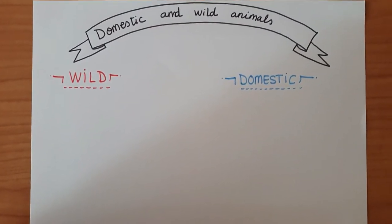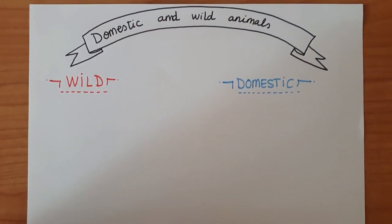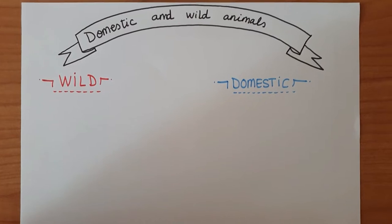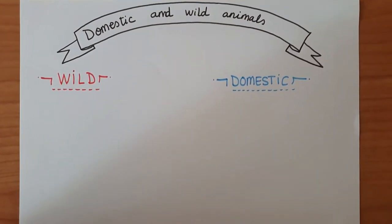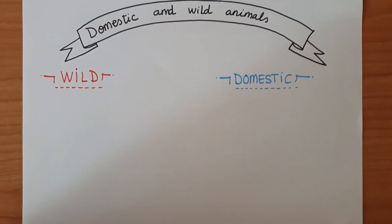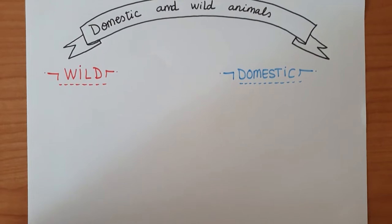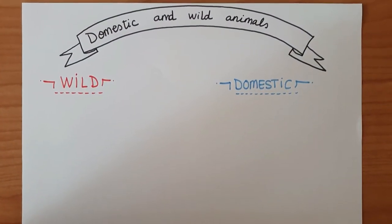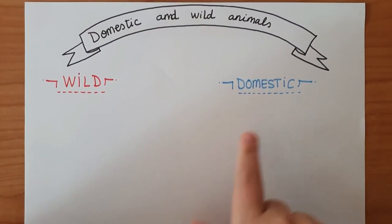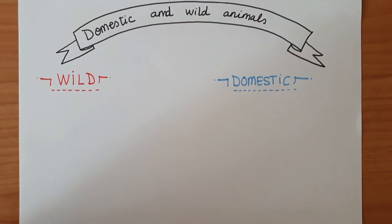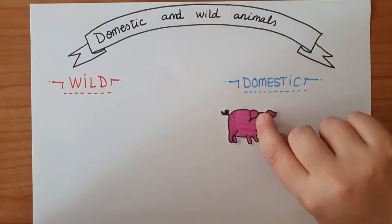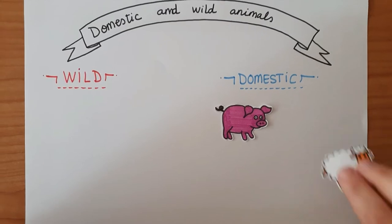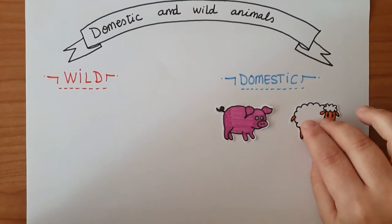Animals can be domestic and wild. Domestic if they live with people, and wild if they do not live with people. Some examples of domestic animals are the pig and the sheep.